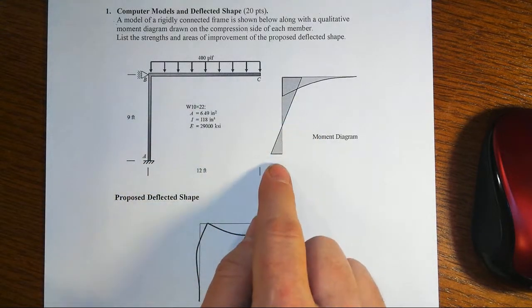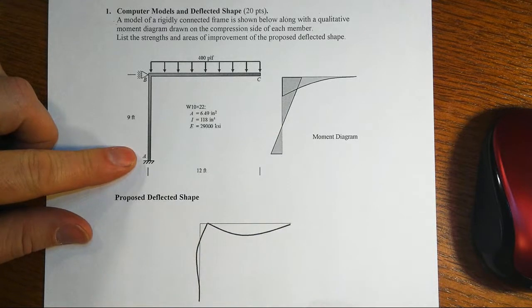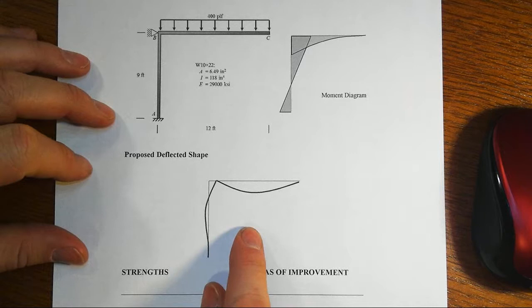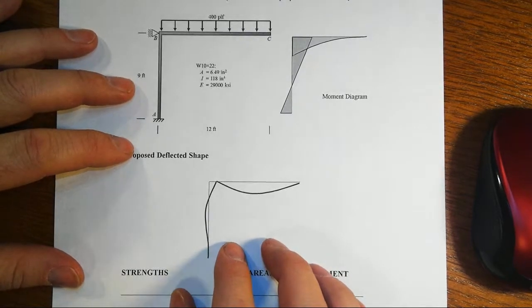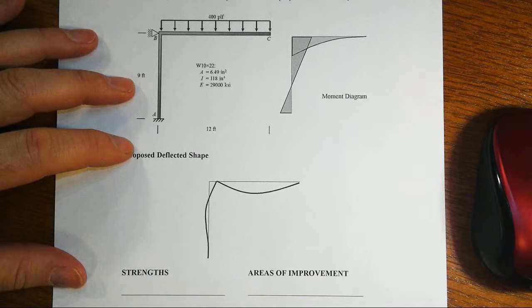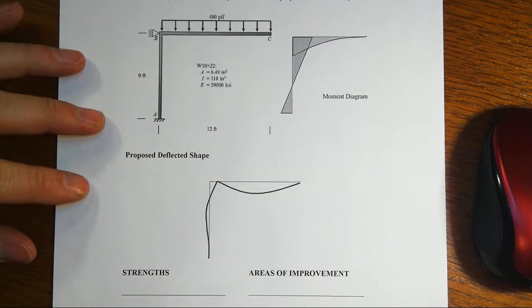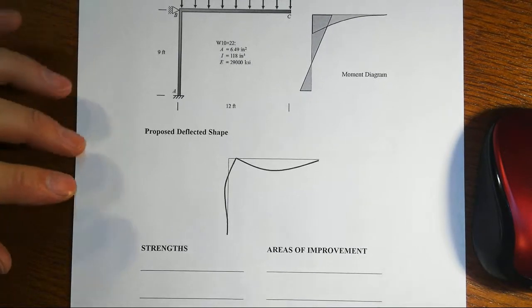We're given a moment diagram that goes along with this statically indeterminate situation and along with that we're given a proposed deflected shape that someone has guessed at how this thing might respond, and we're asked to list the strengths and areas of improvements of the proposed deflected shape.